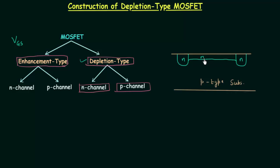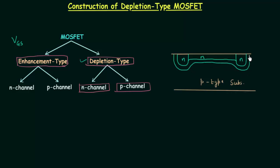This is the n-channel connecting the two n-wells. As you can see, n-type materials are in contact with the p-type material, so a depletion layer will be formed at the junction.